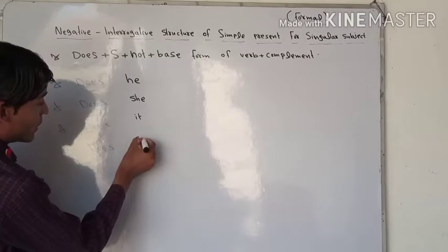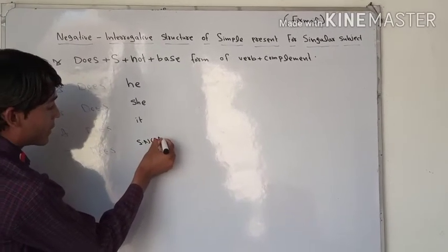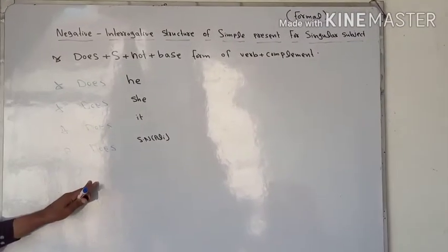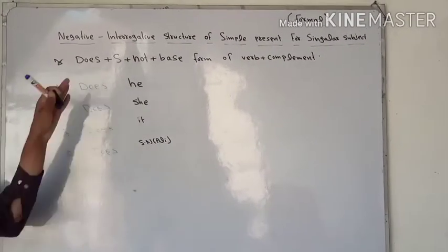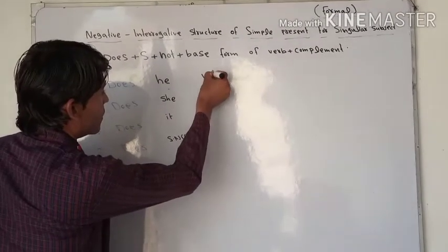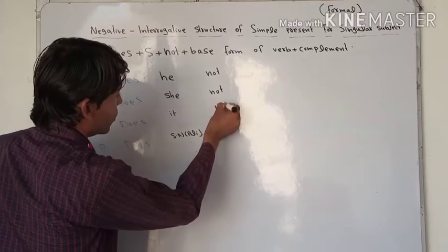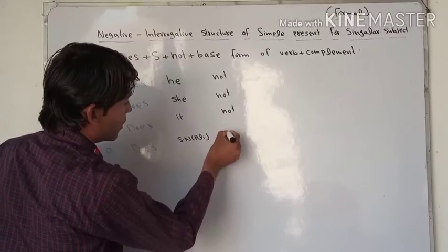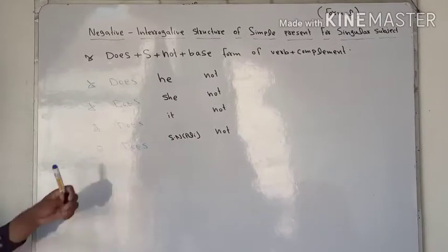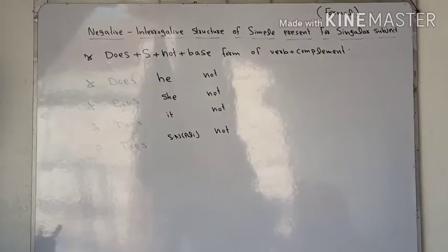A singular noun simply means it may be a name of a person, like 'Ali.' After the subject, we add 'not.' So we add 'not' after 'he,' after 'she,' after 'it,' and after the singular noun as well. Then these are followed by the base form of the verb.